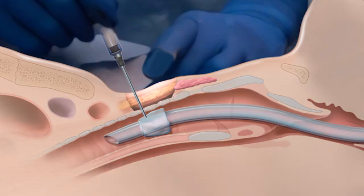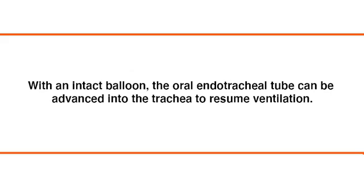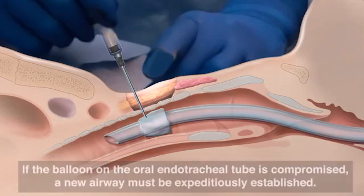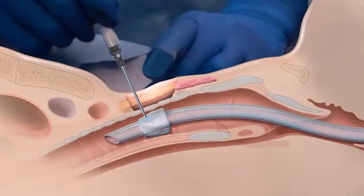In the event that the patient's condition becomes clinically unstable or there is difficulty performing the tracheostomy while the balloon is intact, the oral endotracheal tube is simply advanced to its original location and normal ventilation is resumed. Additional supplies or personnel can be gathered. If the balloon is compromised, so too is the ability to provide positive pressure ventilation, and a new airway must be expeditiously established by means of either a tracheostomy or oral endotracheal intubation with an intact tube.